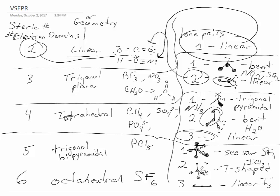For examples, for seesaw, a good example would be sulfur tetrafluoride. For T-shaped, a good example would be iodine trichloride. And for linear, a good example would be the triiodide ion.